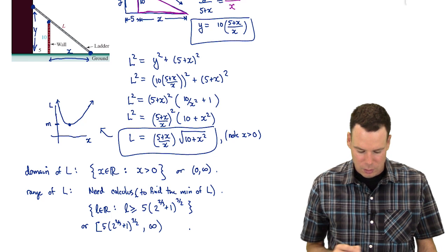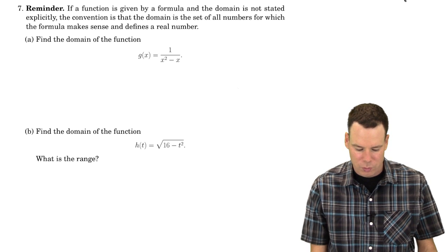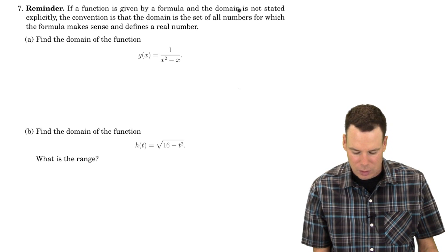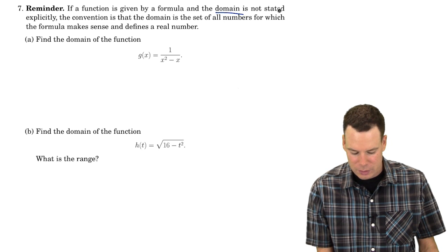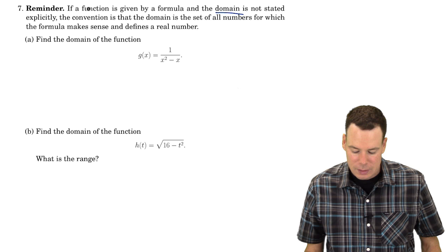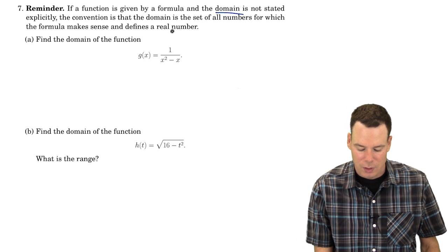All right, let's move on to the next example. As a reminder, if a function is given by a formula and the domain is not stated explicitly, the convention is that the domain is the set of all numbers for which the formula makes sense and defines a real number.